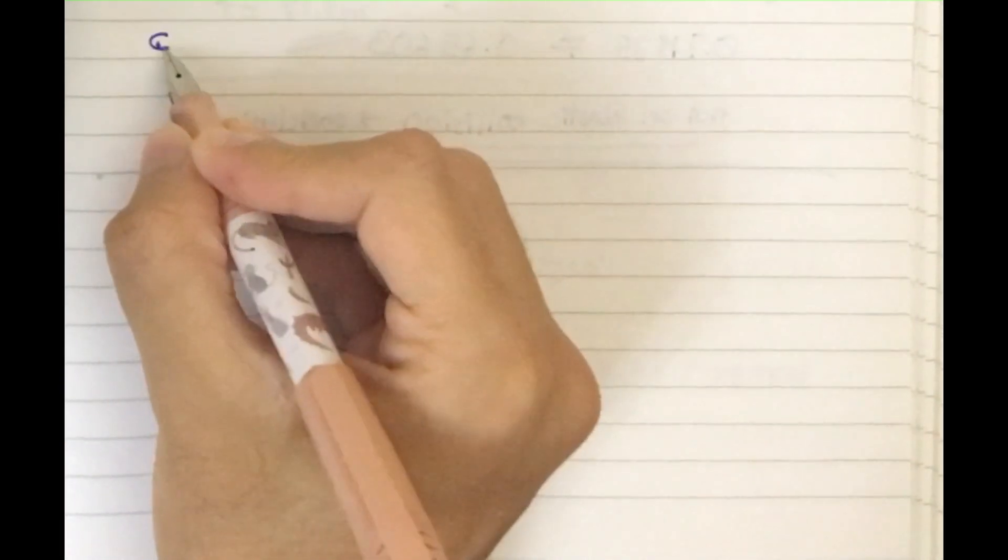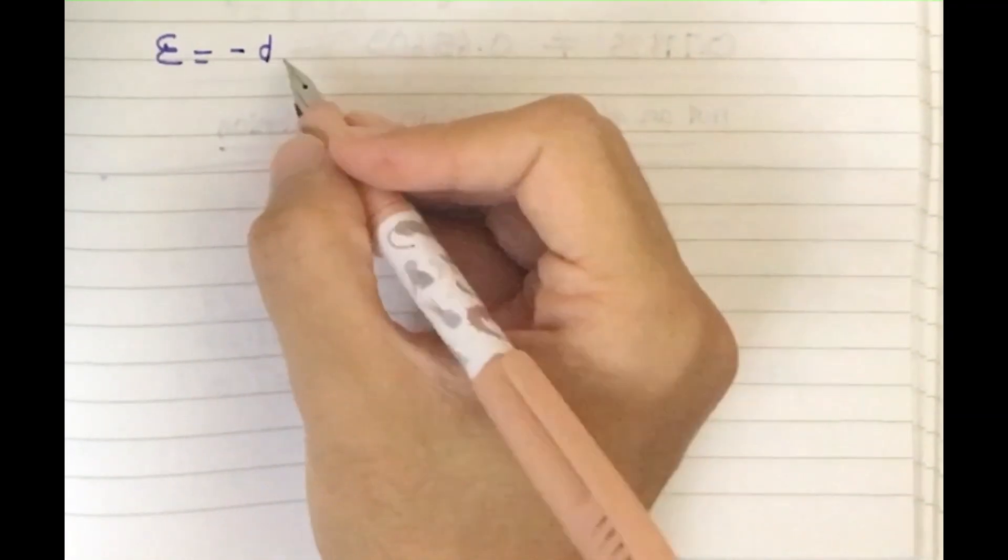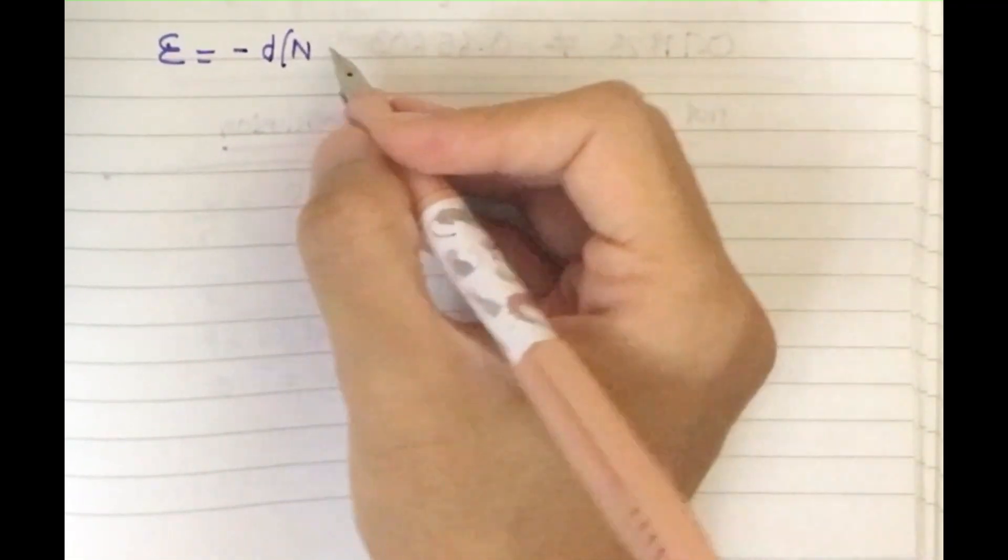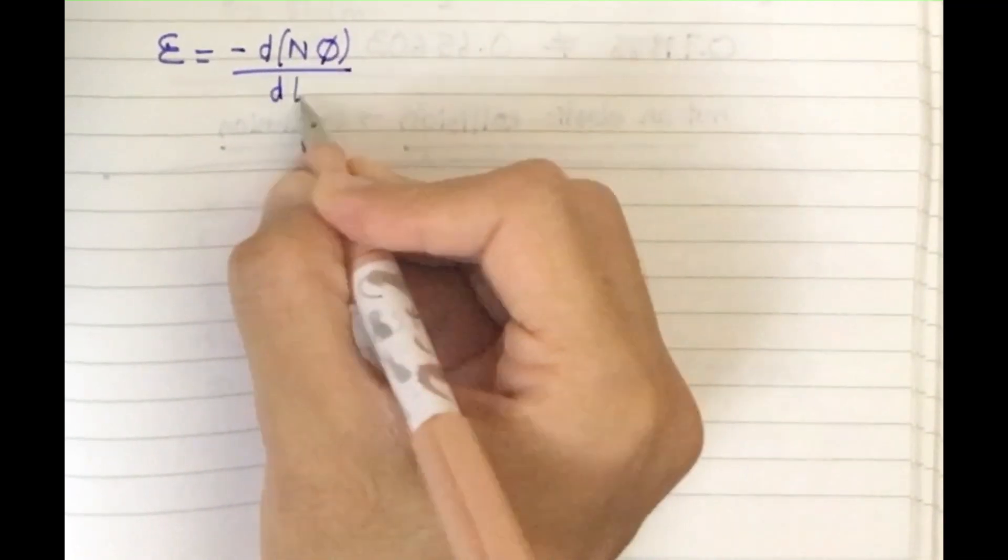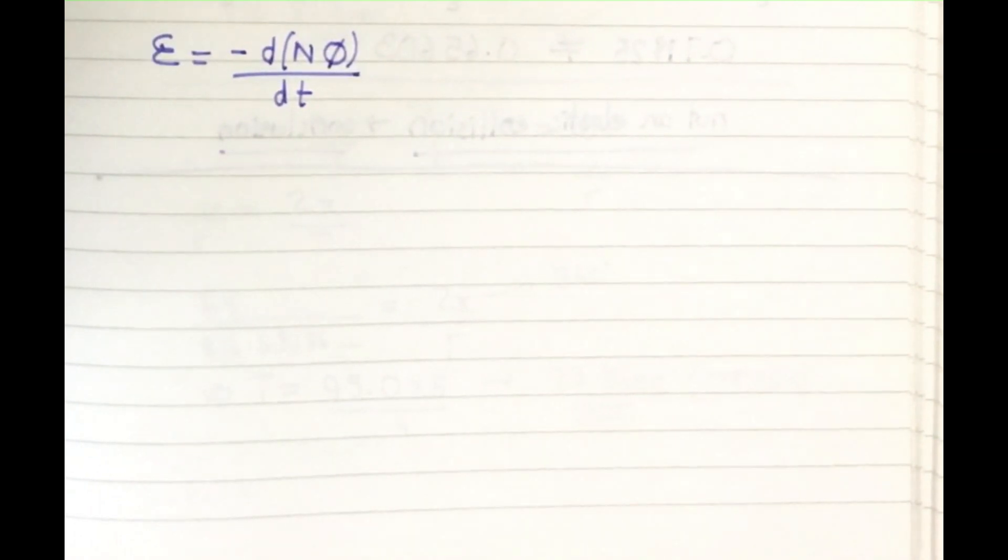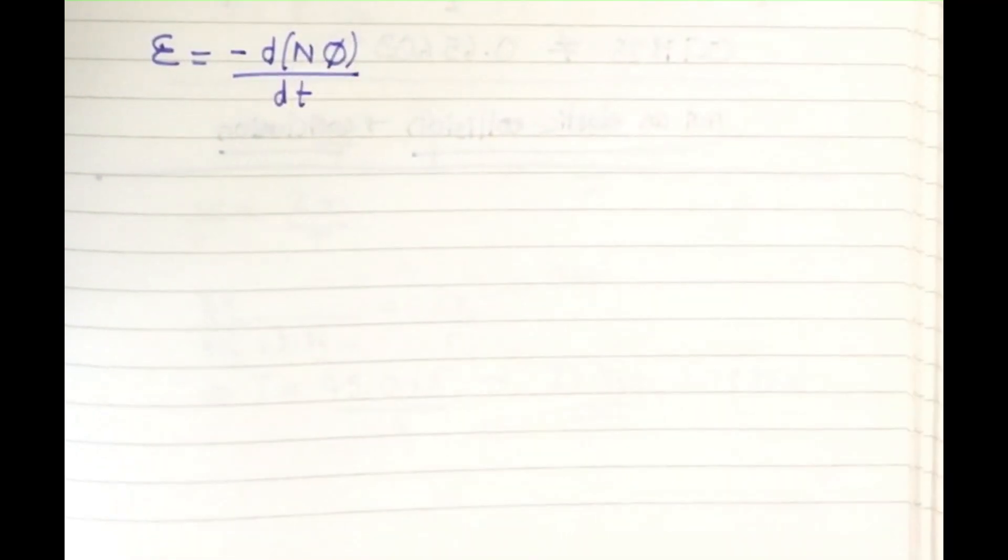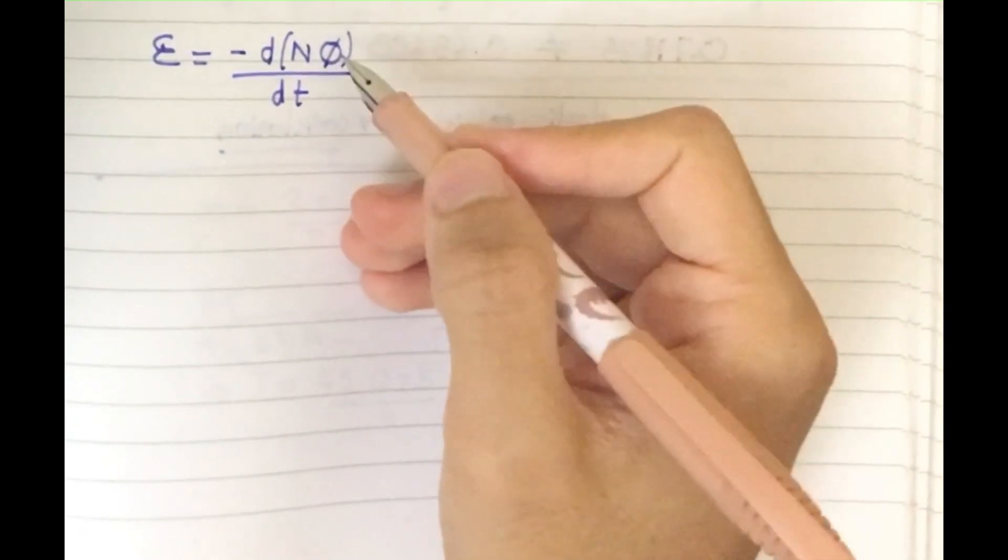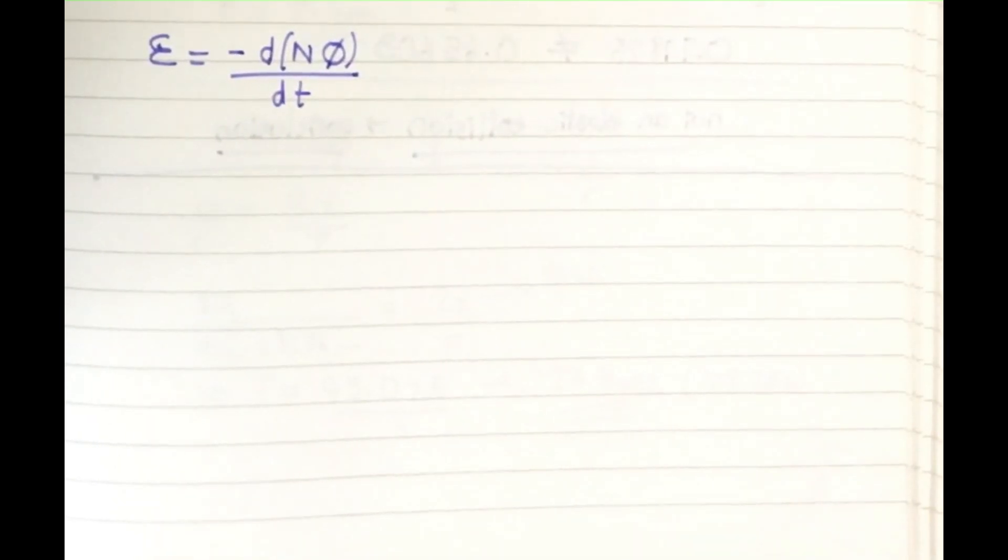We're going to use the formula E equals EMF equals minus d(NΦ)/dt. D is representing a small change in time and in magnetic flux linkage, because N times magnetic flux is magnetic flux linkage.